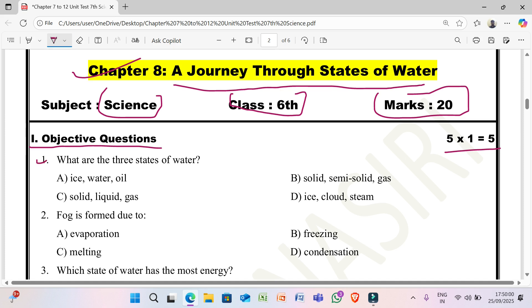First question: what are the 3 states of water? A) ice, water, oil. B) solid, semi-solid, gas. C) solid, liquid, gas. D) ice, cloud, steam.